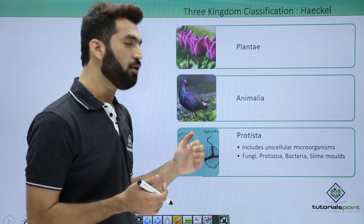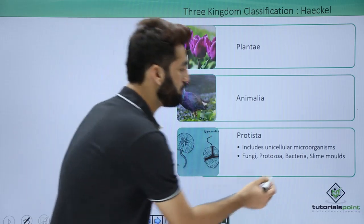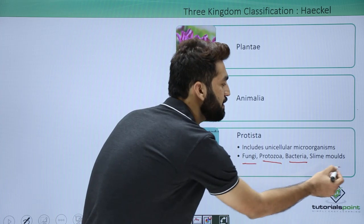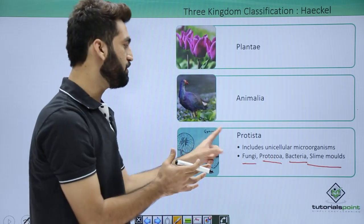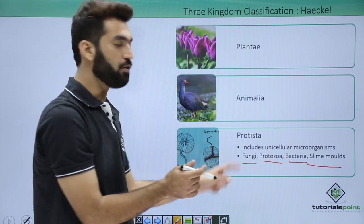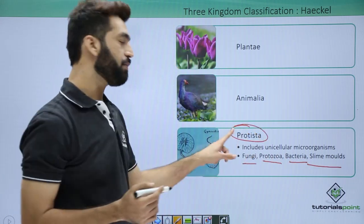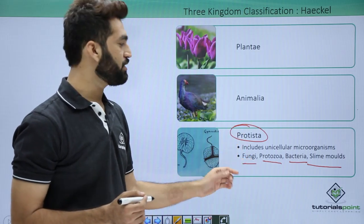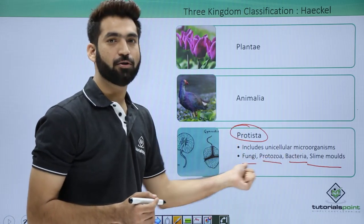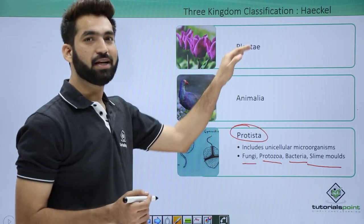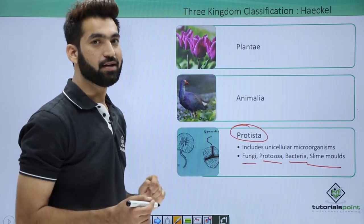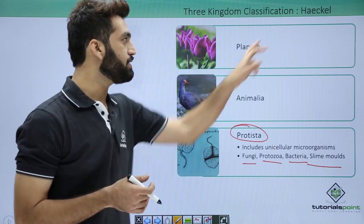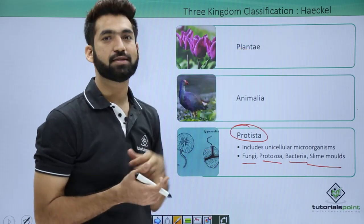So he took out all those odd organisms — those were bacteria, protozoa, fungus, and slime molds — and kept them into a different kingdom called Protista. Protista is the group consisting of all those odd organisms which were in Animalia and Plantae. It is also sometimes asked who coined the term Protista; the answer is Ernst Haeckel.